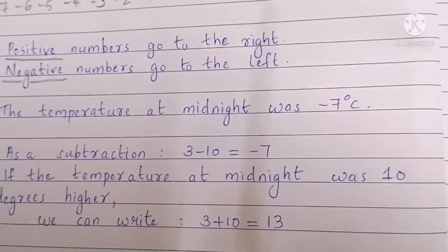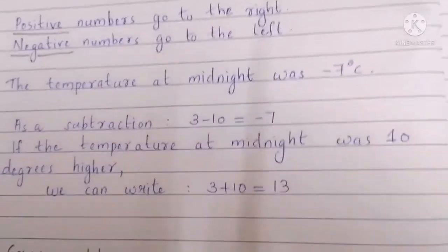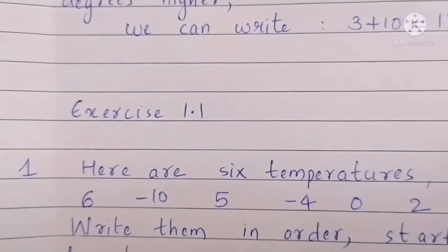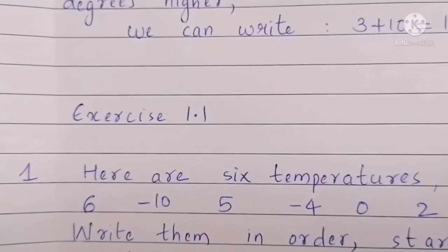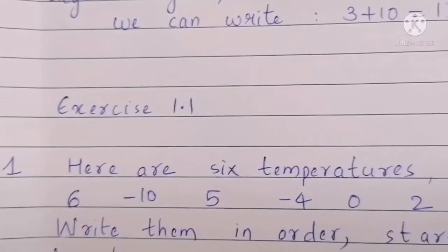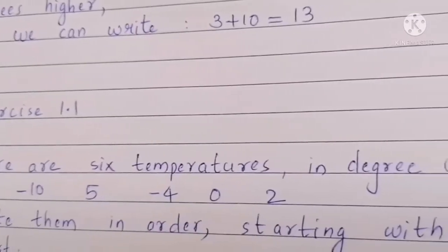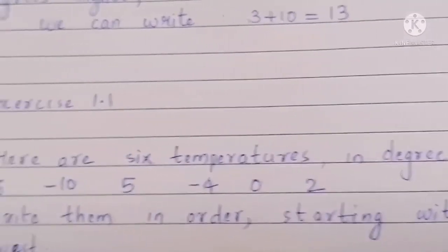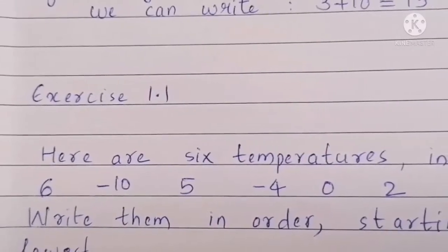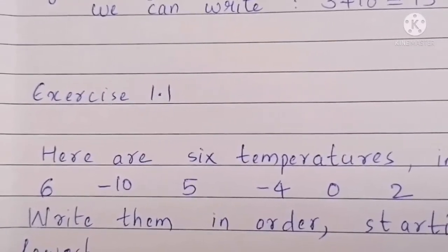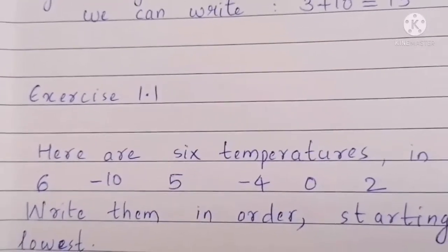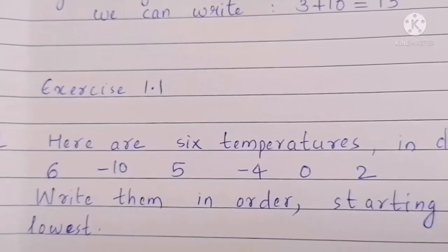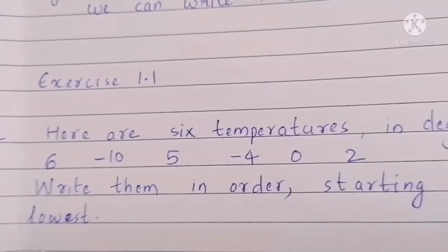Next, Exercise 1.1. Here are 6 temperatures in degrees Celsius: 6°C, minus 10°C, 5°C, minus 4°C, 0°C, and 2°C. Write them in order starting with the lowest.